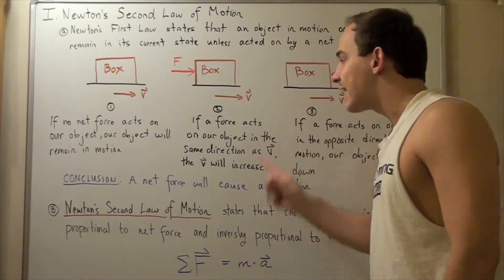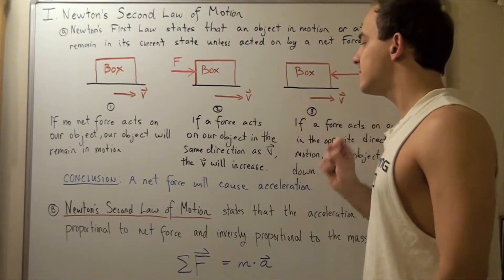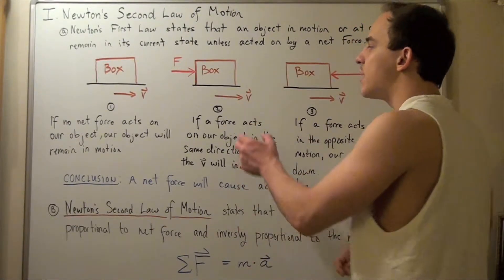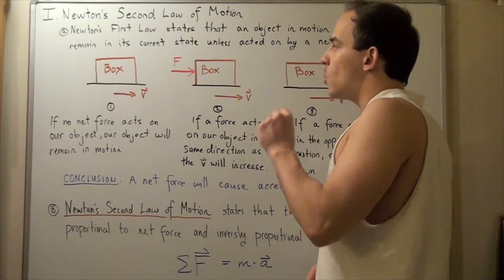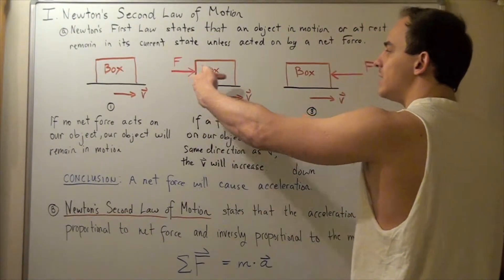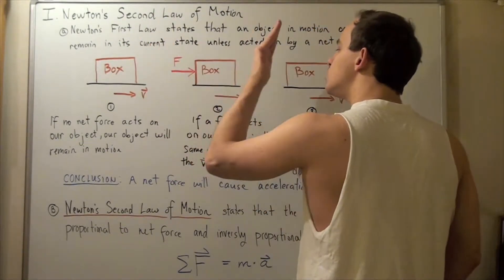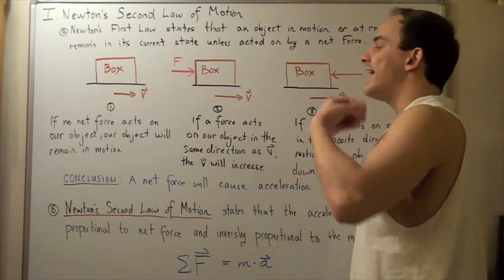Let's look at system number two. If a net force acts on our object in the same direction as the velocity, the velocity will increase. In other words, the magnitude of our velocity vector will increase. If our box is sliding this way and we take our hand and we apply force this way, we will change the velocity by increasing it.